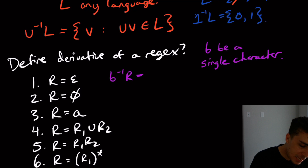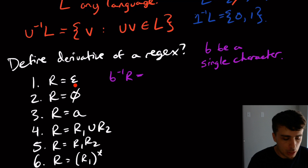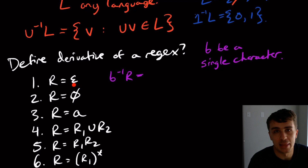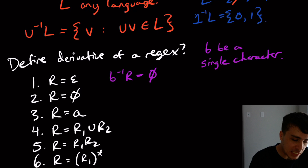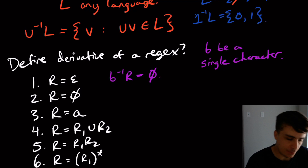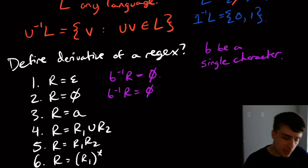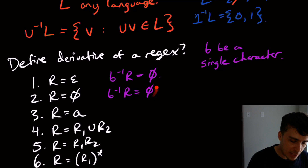If we take the derivative of the empty string regex, the only string in that language is the empty string. So b is not at the start of any string in this language — there's only one string and it has no characters at all. So this is the empty set, because there's no string in here that starts with b. For the empty set, it's the exact same story, because there's no string at all in it. So it can't actually have anything in it.